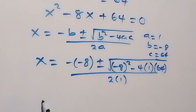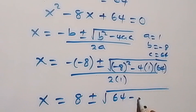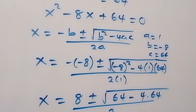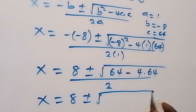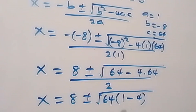From here we have x equals to 8 plus or minus square root of 64 minus 4 times 64, all over 2. We can factor 64 out under the radical: that becomes 64 times the quantity (1 minus 4), all over 2.